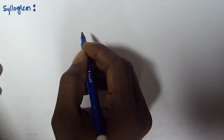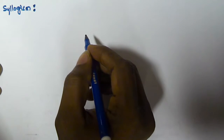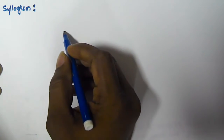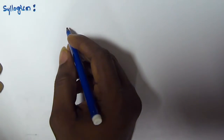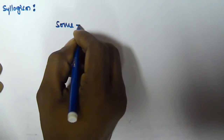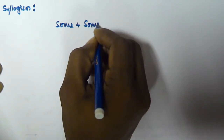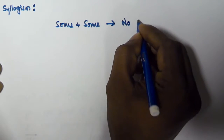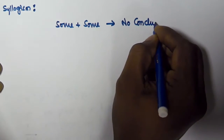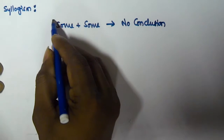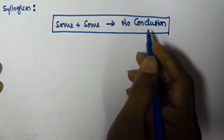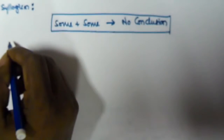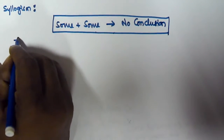Hello friends. In this video we will see another problem related to syllogism, and solving those problems using a syllogism rule called 'some plus some will give no conclusion.' Now we will see some syllogism problems based on this rule. The rule is: some plus some will give no conclusion.